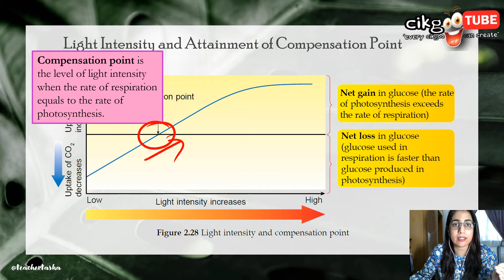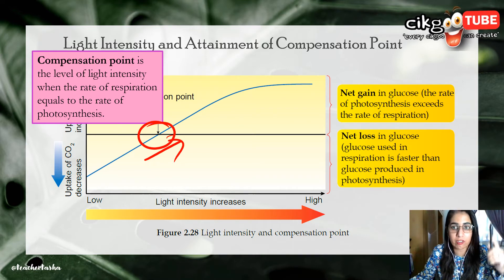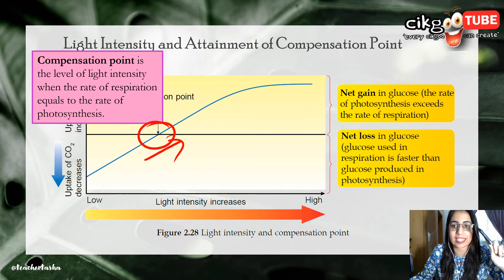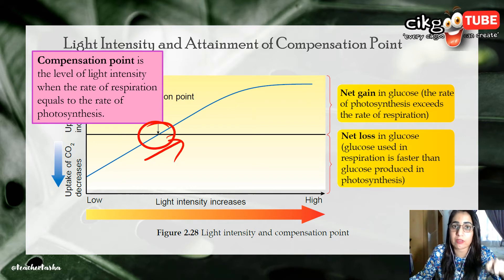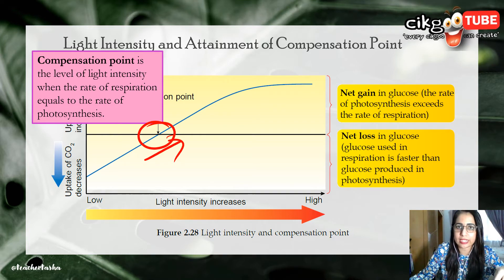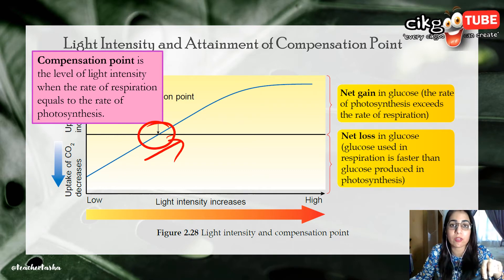The compensation point is the level of light intensity at which the rate of respiration equals the rate of photosynthesis. At higher light intensity, the rate of photosynthesis becomes faster than the rate of respiration. At this point, carbon dioxide is insufficient and needs to be absorbed from the atmosphere to compensate for its usage in photosynthesis, and excessive oxygen is released into the atmosphere. For growth and reproduction to take place, the rate of photosynthesis must exceed the rate of respiration on a daily basis.